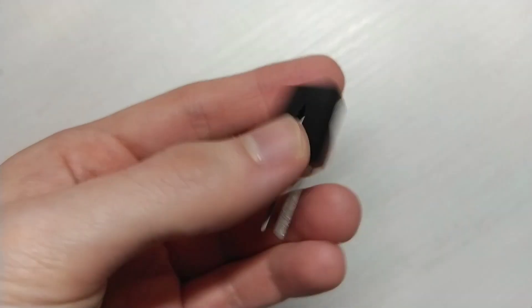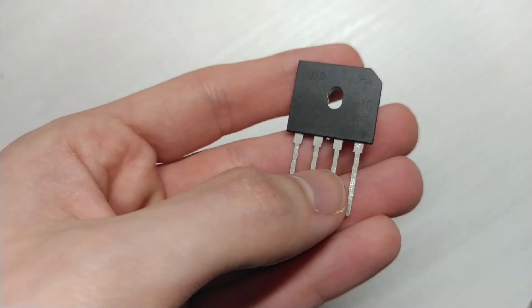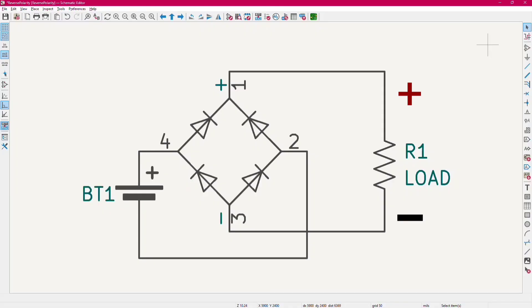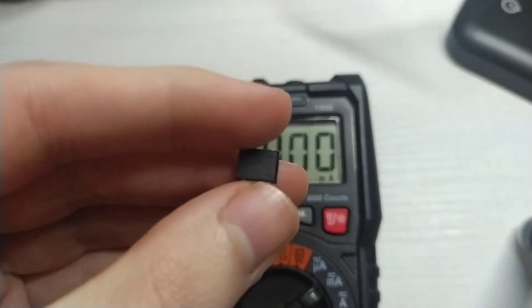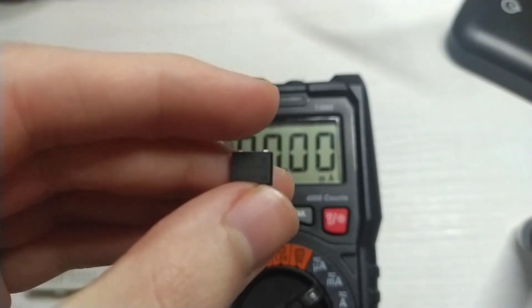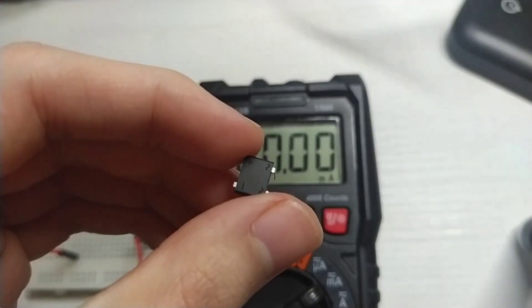Now there is one other fun reverse polarity protection circuit that uses a bridge rectifier. And basically, no matter how you connect the battery, you will end up with the same output polarity. Okay, this is the diode bridge I'm gonna use. It's this tiny one but it's compatible with the breadboard, so it's pretty good.